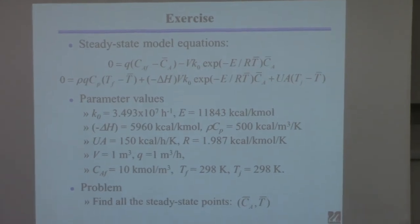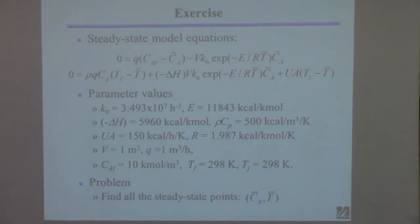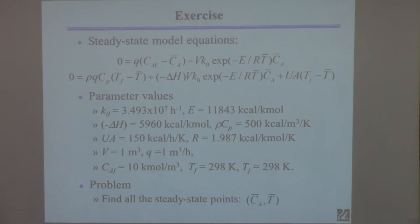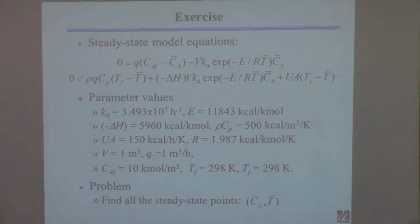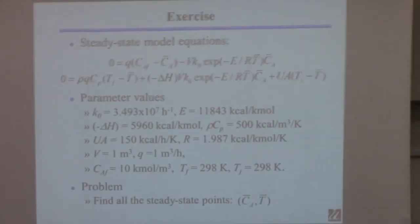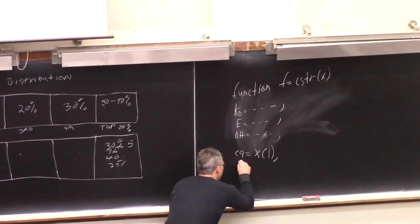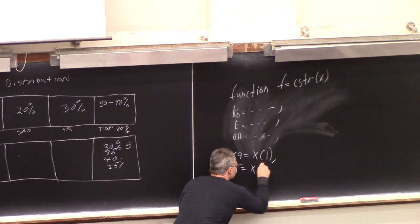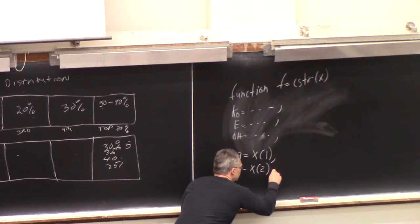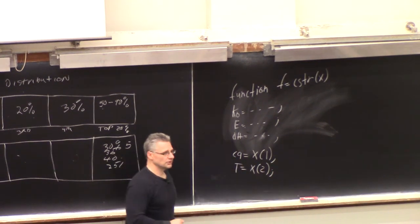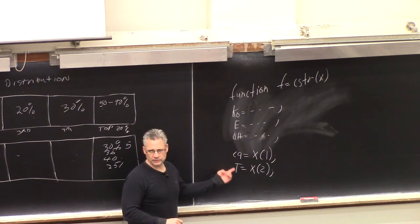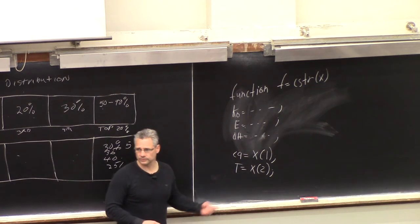The reason we define the parameters is because you don't want to substitute those into the equations with numbers. Because this way, if I tell you change the activation energy, you just change it here and it'll change everywhere else it might appear. If you plug it in the equation and I tell you to change the activation energy, then you've got to look in the equation and find out where you type the actual number and change it there. It's very sloppy. You don't want to do it that way. So you define all the parameters.